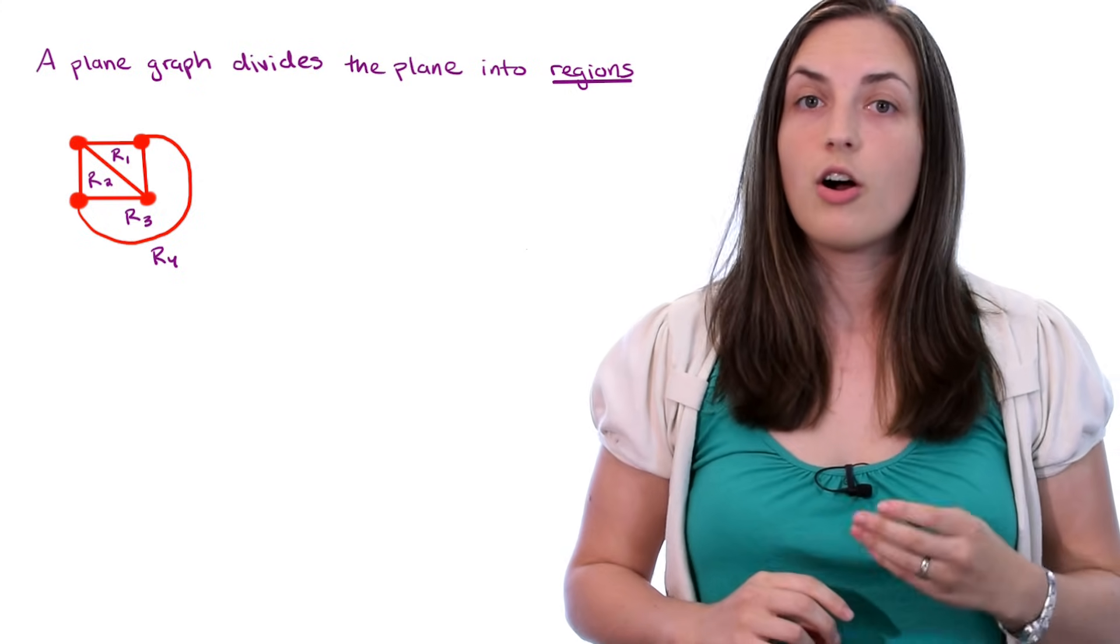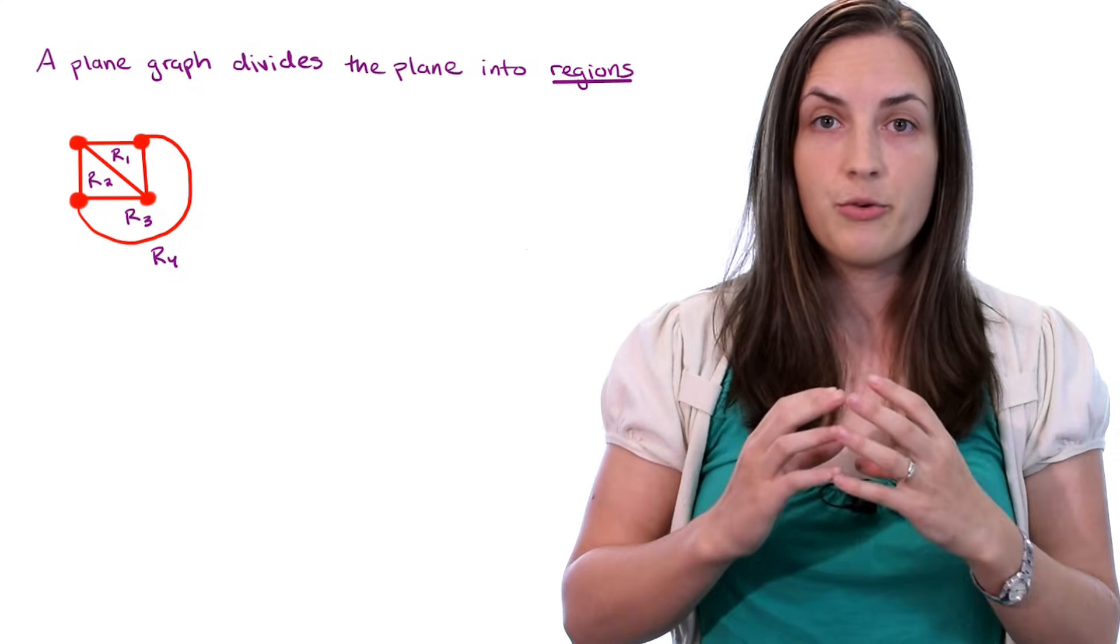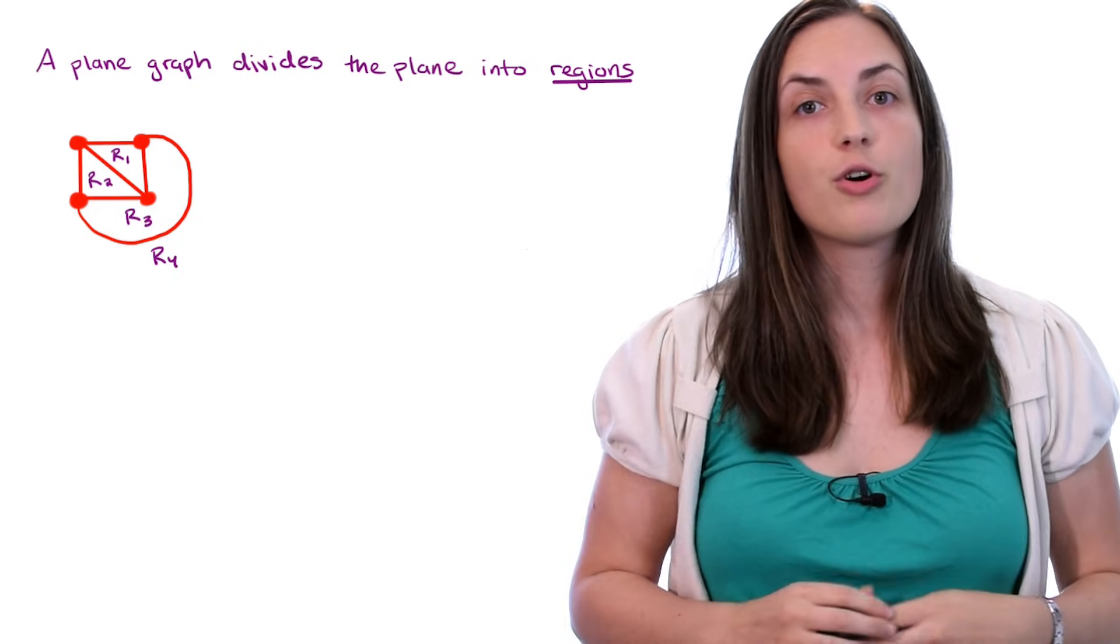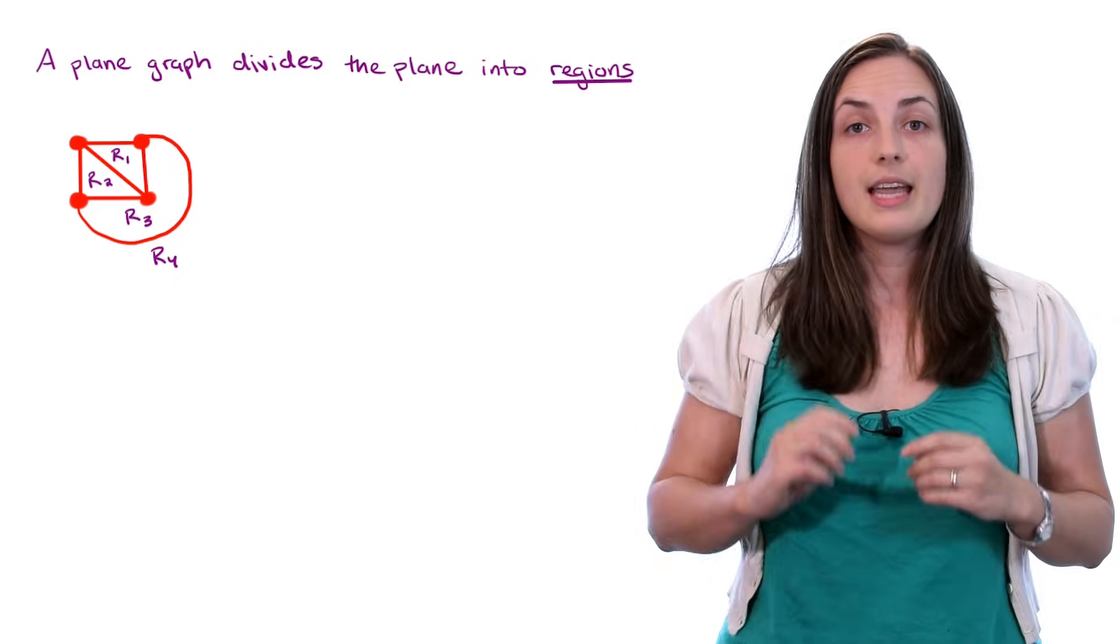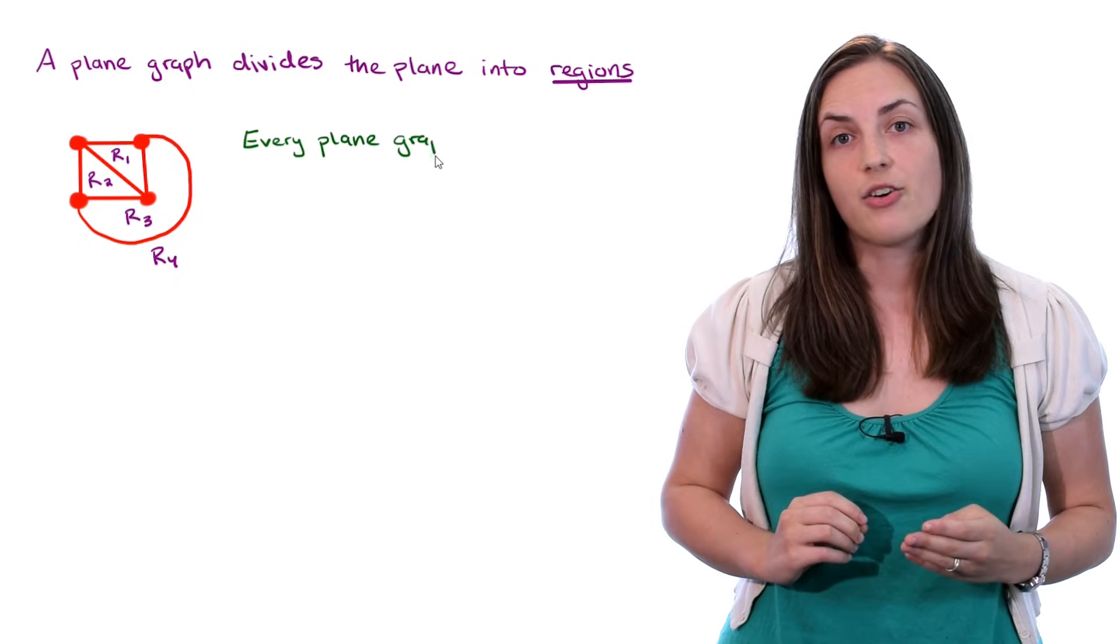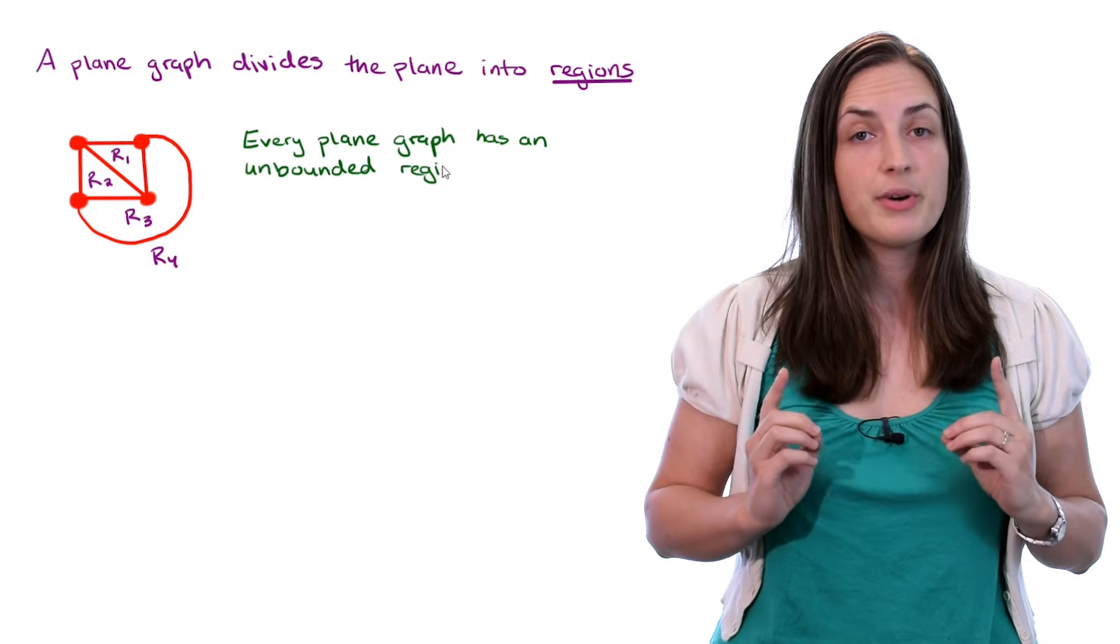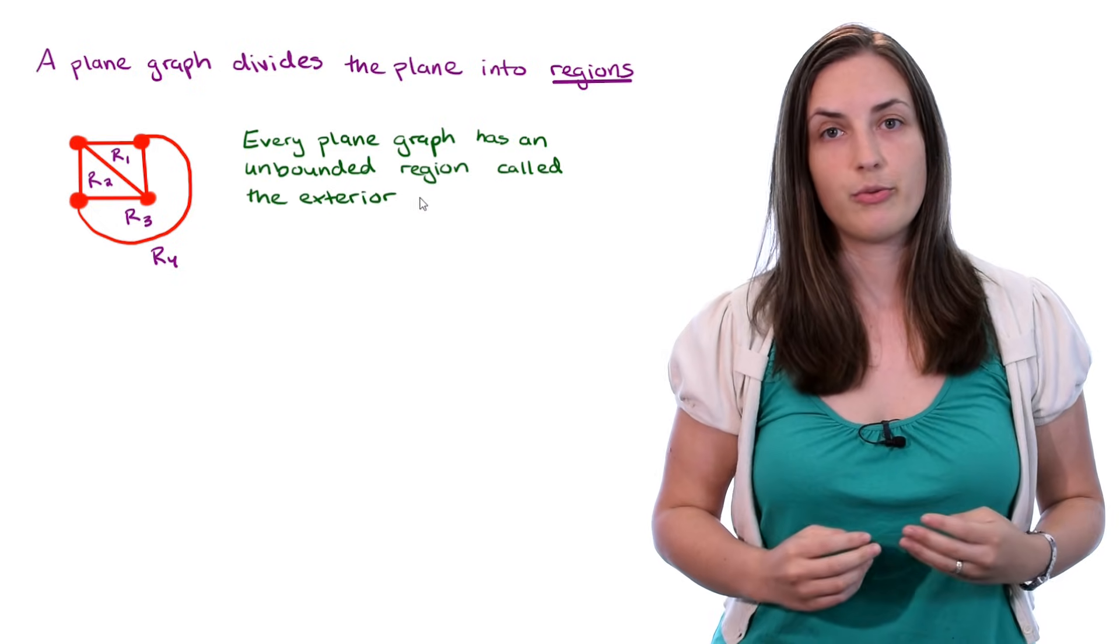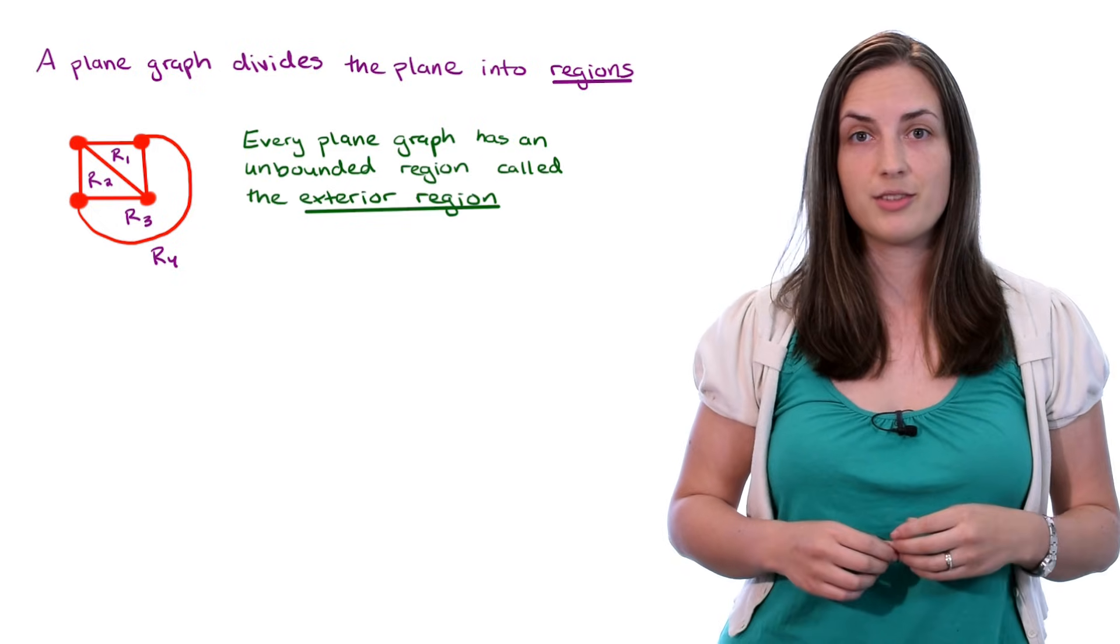Notice that r1, r2, and r3 are bounded, they're contained, but r4 is an unbounded region. In fact, every plane graph has an unbounded region which is called the exterior region.